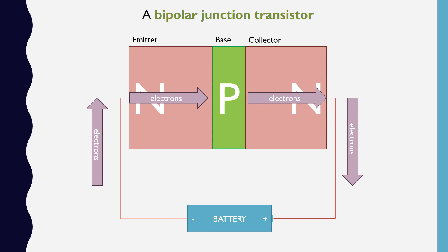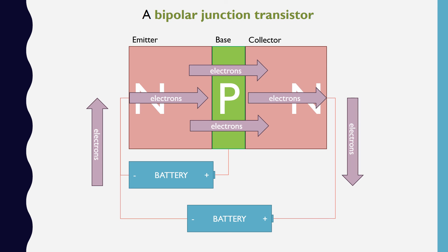To turn the transistor on, we introduce another battery between the emitter and base. This diode-like setup causes additional electrons to enter the emitter and creates additional holes in the base. The depletion regions get thinner, and electrons are able to cross. We end up with a large current flowing through the transistor, from the collector to the emitter, by applying a small current to the base, making the transistor an amplifier. We also have the ability to turn the current on and off, making it a switch.